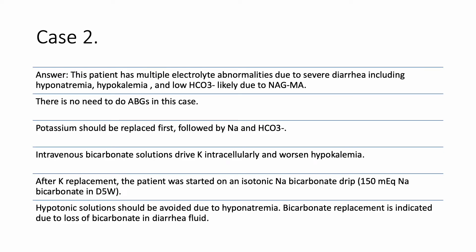The patient has multiple electrolyte abnormalities due to severe diarrhea: hyponatremia, hypokalemia, low bicarb. This is usually consistent with non-anion gap metabolic acidosis. I wouldn't check ABGs — there is no need. But I cannot say for sure it's non-anion gap metabolic acidosis without an ABG. I would say it is consistent and likely due to that.